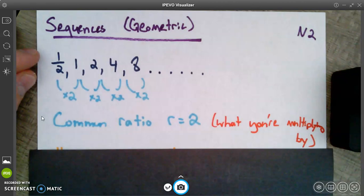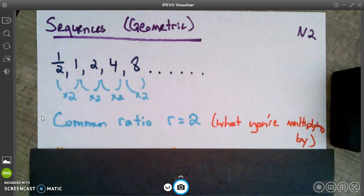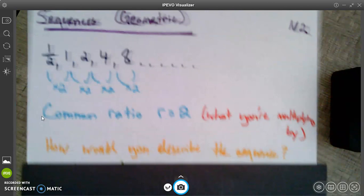So our common ratio R for this particular sequence is two, times by two. Piece of cake, right? So here's what I want, a little thought experiment. You have a little sibling or cousin or someone smaller than you comes in and asks you to describe this sequence without just giving them a formula. What would you have to tell them to describe that sequence? Think about it for a second.